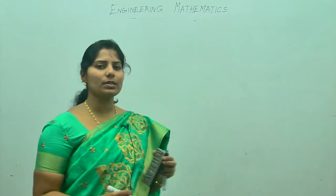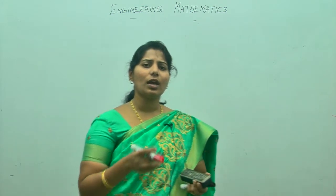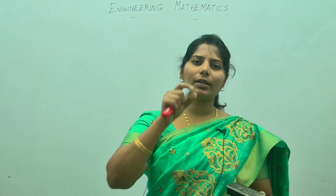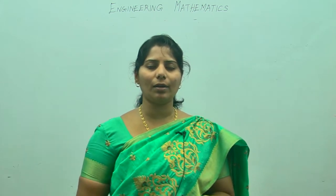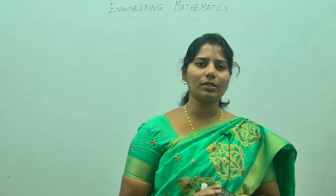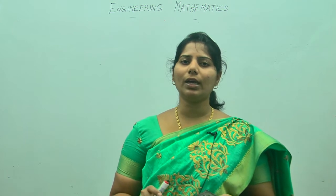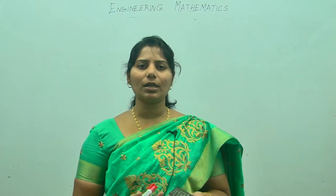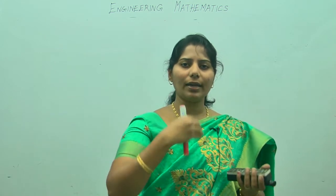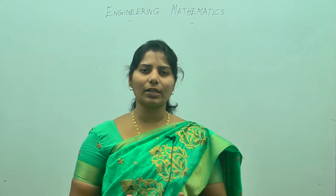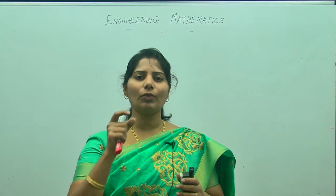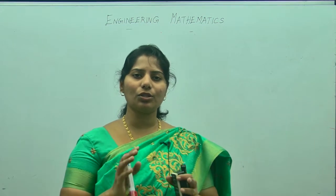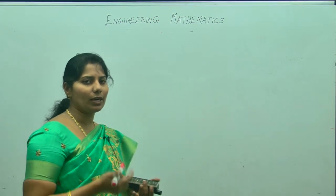I am going to teach you the simple topics: symmetric matrix, skew symmetric matrix, and orthogonal matrix, in which we are going to apply them for the diagonalization of a matrix. For diagonalization, the diagonal form has eigenvalues on the diagonal and all other elements are zeros. We use the modal matrix — which is formed by finding eigenvalues and writing the corresponding eigenvectors column-wise.